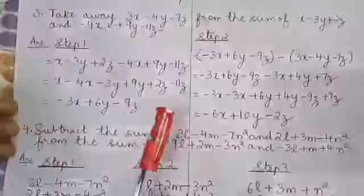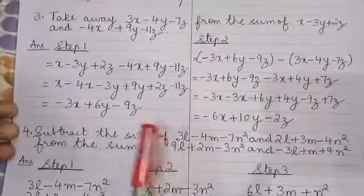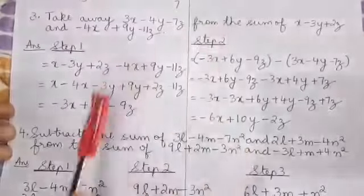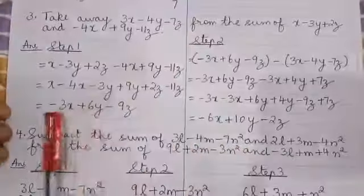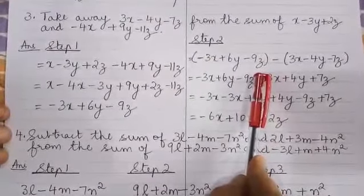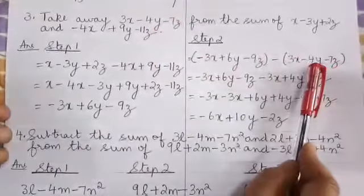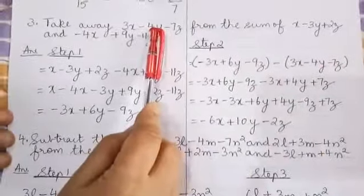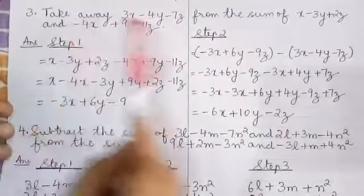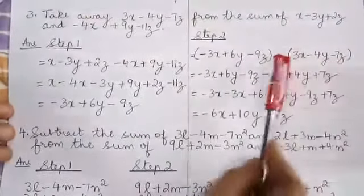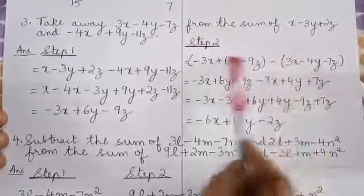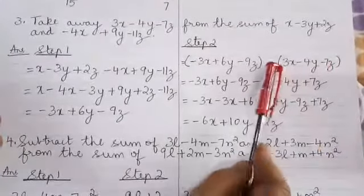Take away means subtract. When we are subtracting, we need to write the expression that comes after 'from' first. Step 2: write out this expression first, enclose the terms in a bracket, followed by this expression also enclosed in a bracket. Since we have to subtract, we connect these two brackets with a minus sign.